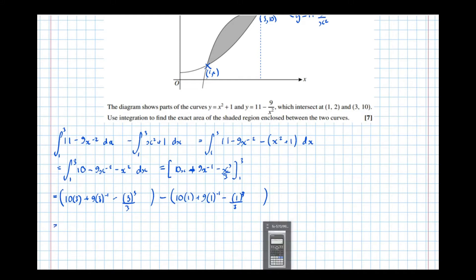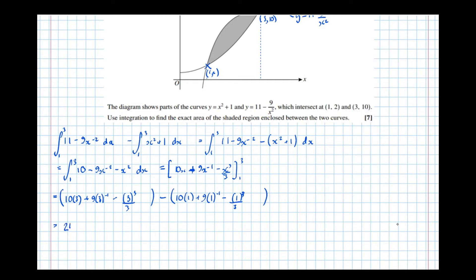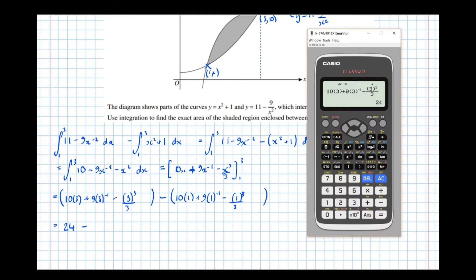Evaluating that, we get 10 lots of 3, plus 9 lots of 3 to the power of minus 1, take 3 cubed over 3, equals 24. So 24 is the first bracket. Okay, let's evaluate the second bracket.